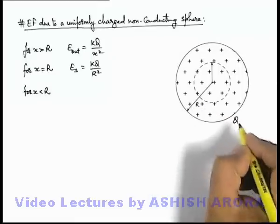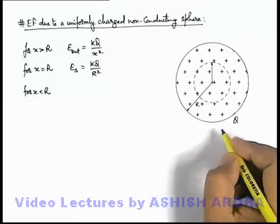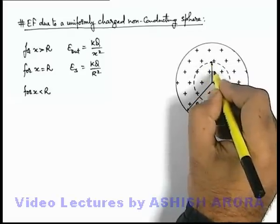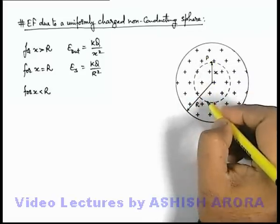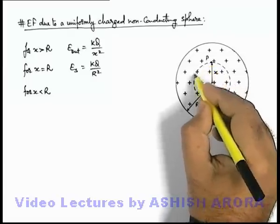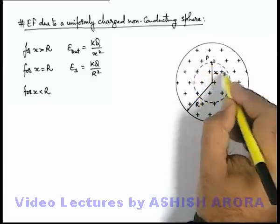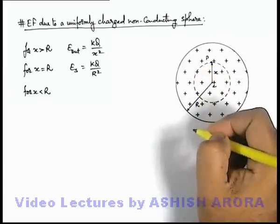The sphere of radius R totally charged with a charge q, and say inside at a distance x, if we are required to find the electric field at this point P. Then we consider a Gaussian spherical surface of radius x with centre at the centre of sphere.